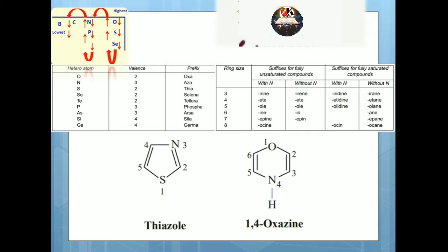Now looking at priority examples: a 5-membered unsaturated ring with one sulfur and one nitrogen — the suffix for 5-membered unsaturated is '-ole', prefix for sulfur is 'thia', for nitrogen is 'aza', giving thiazole. A 6-membered ring with one oxygen and one nitrogen, unsaturated — the suffix is '-ine', prefix is 'oxa' for oxygen and 'aza' for nitrogen. Numbering: oxygen gets position 1 (highest priority), giving 1,4-oxazine.